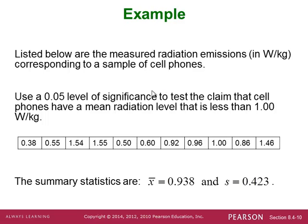For this example, we have below here some measured radiation emissions in terms of watts per kilogram corresponding to a sample of cell phones. We're going to use a 0.05 level of significance to test the claim that cell phones have a mean radiation level that is less than 1.00 watts per kilogram. Notice this phrase, less than 1 watt per kilogram. So that's our claim. So think about what the null hypothesis is going to be.